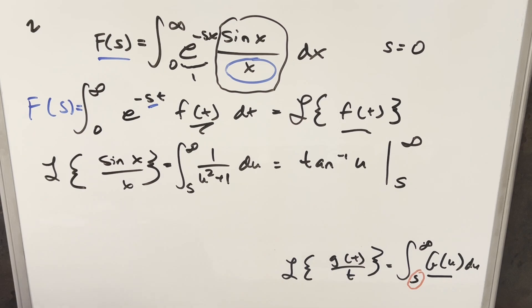But now just evaluating this, we're going to have arctan at infinity. That's going to be pi over 2 minus, then evaluating at s, we'll just leave it for the moment, this is just going to be arctan of s. And then this here is our function in terms of s.